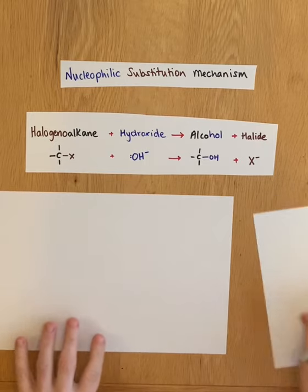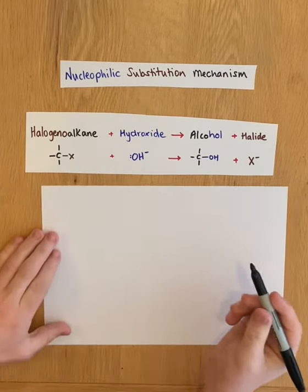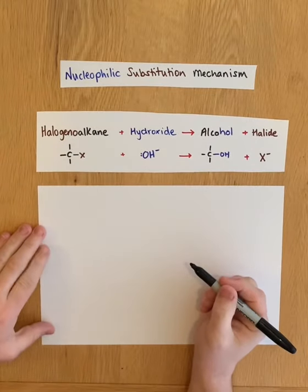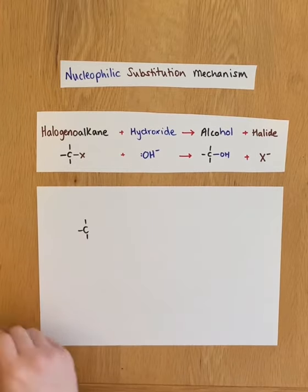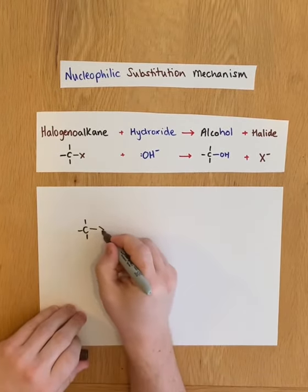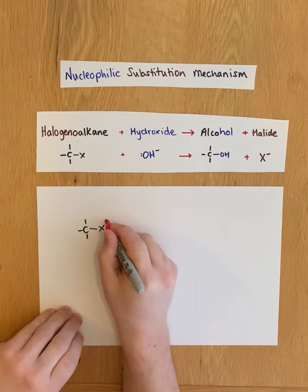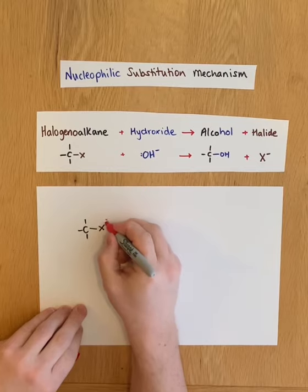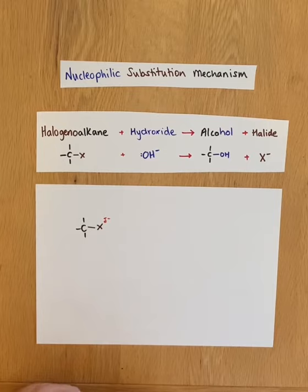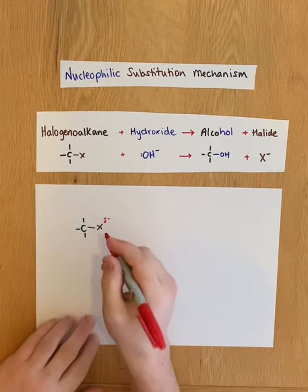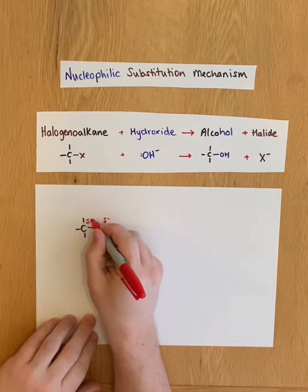If we just look at the generic mechanism for this nucleophilic substitution reaction, halogenoalkanes contain a polar carbon-halogen bond and that is very important because the halogen is more electronegative than carbon. It pulls the pair of electrons in the covalent bond towards it, therefore creating this polar bond where the halogen is delta negative and the carbon is delta positive.